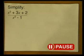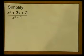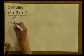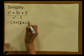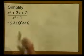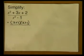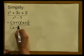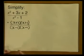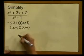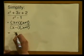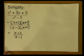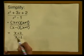Simplify x squared plus 3x plus 2 all divided by x squared minus 1. We already know the numerator factorizes as x plus 2 times x plus 1. Now can we factorize the denominator? Look carefully — it's a difference of two squares, which factorizes as x minus 1 times x plus 1. We now have common factors: x plus 1 cancels with x plus 1, leaving x plus 2 all divided by x minus 1. We cannot cancel further as both the numerator and denominator now contain terms and not factors.